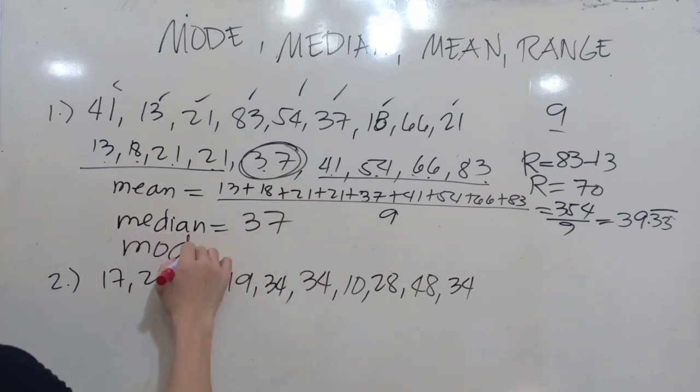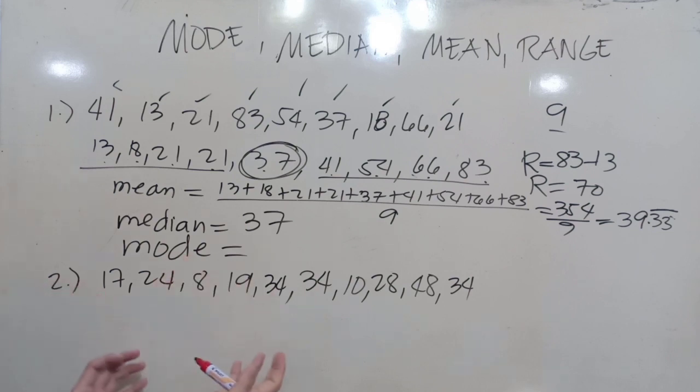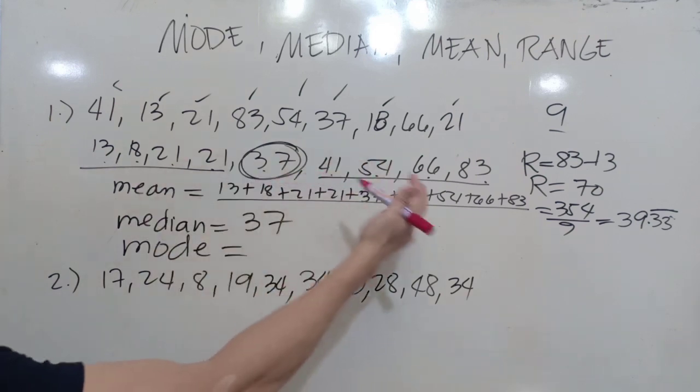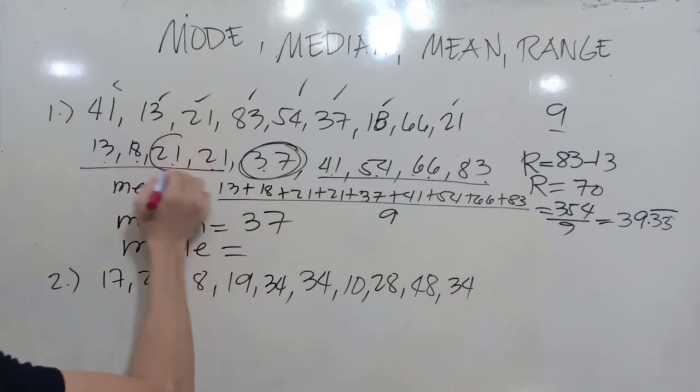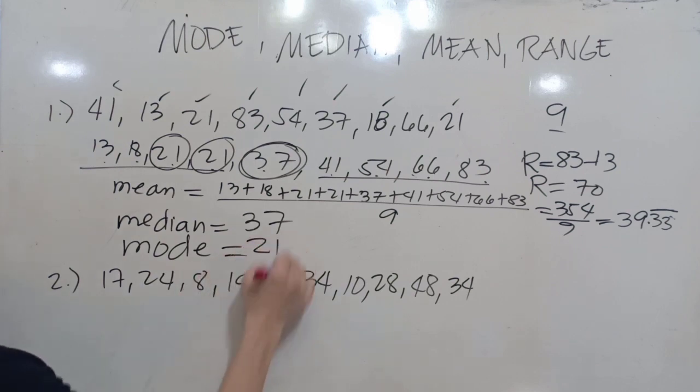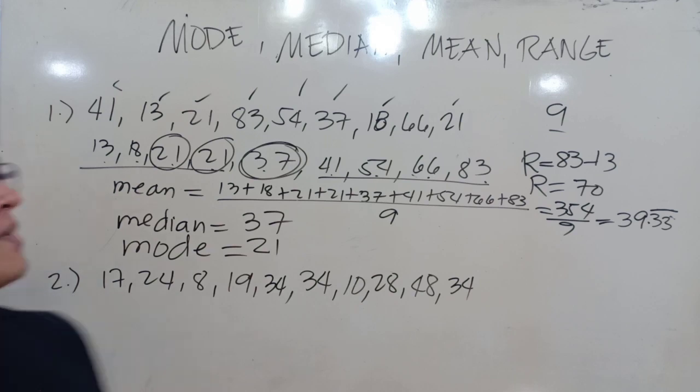How about our mode? Mode is just the most frequent data that appear in the given set of data. So mode, the one that appears most frequently. We'll just have 21 - it appears twice. So that is our mode, 21. So that is the mode, the median, and the mean.